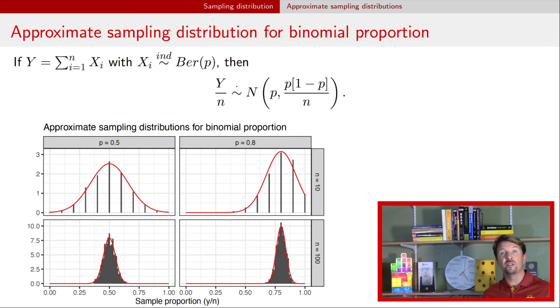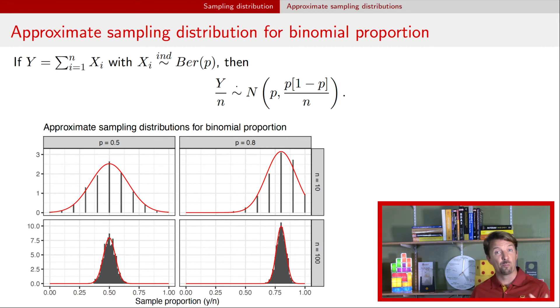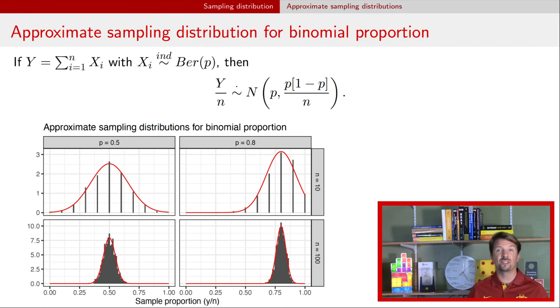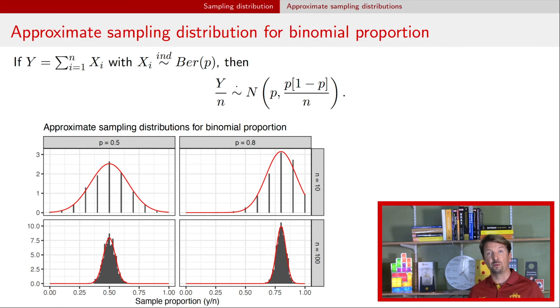The central limit theorem is a way to construct sampling distributions — at least approximately — any time you have sums and averages of independent random variables with a common mean and a common variance.